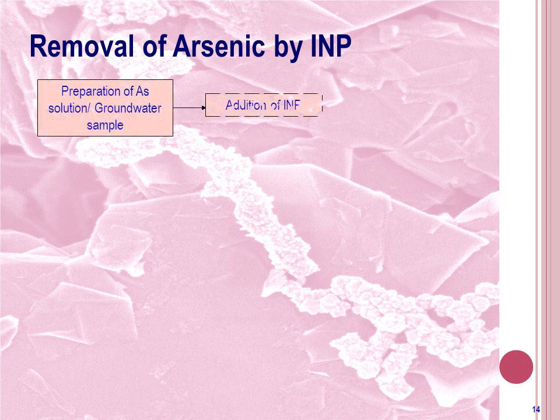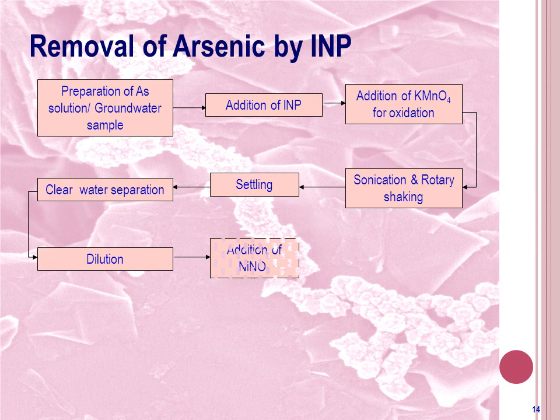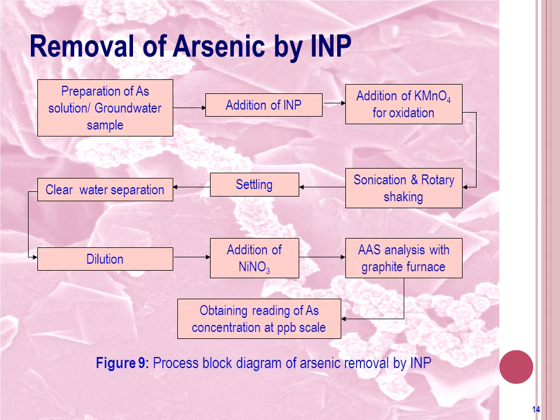First, arsenic solution is prepared and INP is added to the prepared solution. The solution is then shaken in a rotary shaker and sonicator. After settling of the added particles, clean water is separated from above and diluted by adding deionized water. Sodium nitrite is added to this diluted solution as a matrix modifier. The sample is then taken in the sample holder of an atomic absorption spectrophotometer and the arsenic concentration reading is observed in PPB scale. In the case of As³⁺ removal from prepared solution, potassium permanganate was added to oxidize arsenite to arsenate to ensure its removal.